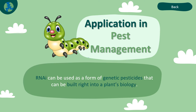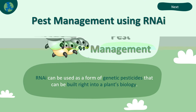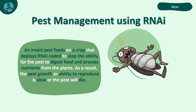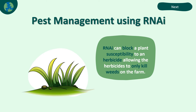Application of ribonucleic acid interference technology in pest management. RNAi can be used as a form of genetic pesticide that can be built right into a plant's biology. First, crops produce RNAi that changes plant chemistry, making the plant unattractive to a pest. Second, an insect pest feeds on a crop that deploys RNAi in order to stop the pest's ability to digest food and process nutrients from the plants. As a result, the pest's growth or ability to reproduce is slowed or the pest will die. Third, RNAi can block a plant's susceptibility to an herbicide, allowing the herbicide to only kill weeds on the farm.